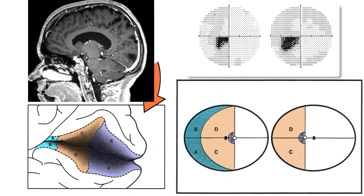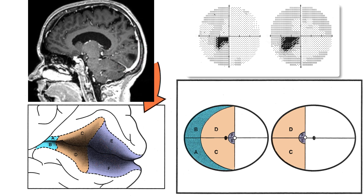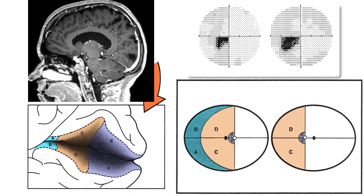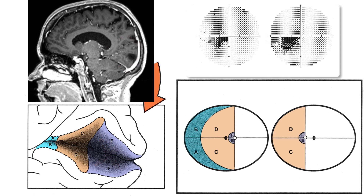Macular splitting defects are so small that they will be overlooked on standard static perimetry, but patients are very bothered by them, especially when trying to read. The 10-2 protocol on the Humphrey perimeter and equivalent protocols on other visual field testing devices are more successful in finding these defects. When patients try to read, they find that one half of the viewed word is missing, making reading effortful.